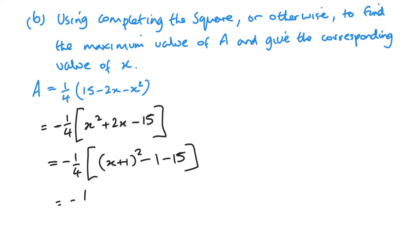So X squared plus 2X will become X plus 1 squared minus 1 squared is 1 minus 15. So I've got minus a quarter X plus 1 squared minus 16, or minus 1 quarter X plus 1 squared plus 4.